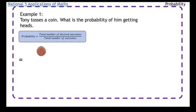So the total number of desired outcomes is one because there's only one side that has a head on it. And then how many sides are there in total? There's two sides of a coin. There is a head side and the tail side. So as a fraction, we're going to write that as one over two.